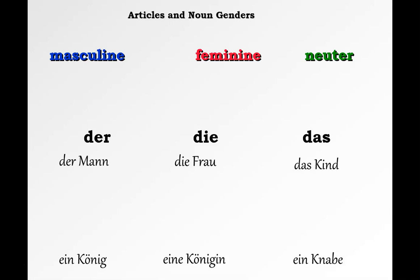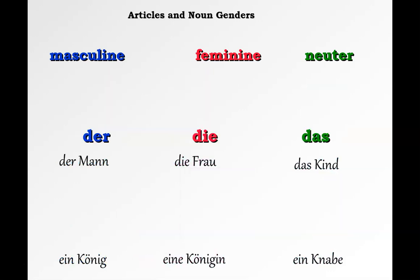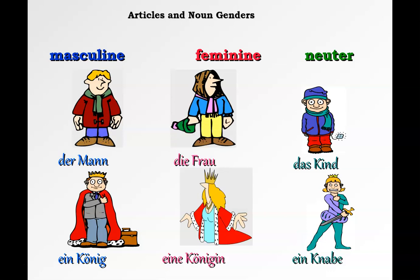Here are some examples using the definite articles and the 'ein' or indefinite articles. 'Der,' 'die,' 'das' are the definite articles. Then we have 'ein,' 'eine,' and 'ein' as our indefinite articles, which in English are 'a' and 'an.'